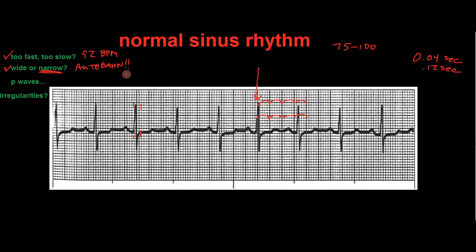Now we're going to look at the P waves. We'll pick a few out — here's one, here's one, here's one. They all look the same, and there is one in front of every QRS. That means the sinus node is in charge, so we have a sinus rhythm. The sinus node is making a P wave up in the atria. The QRS's are narrow, so after leaving the AV node and going down into the ventricles, the signal is following the Autobahn. Everything's happening the way it should be — this is a normal sinus rhythm.